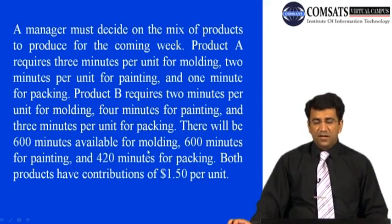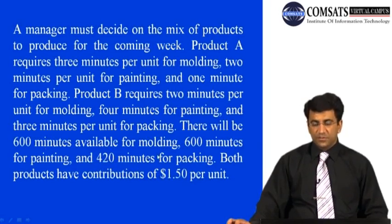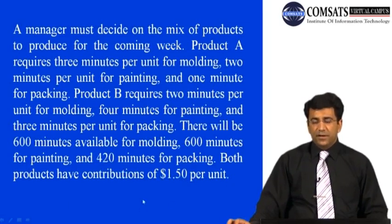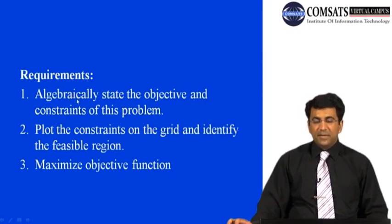Both products have contributions of $1.50 per unit — producing one unit of Product A gives $1.50 profit, and one unit of Product B also gives $1.50 profit. The task requires us to: state the objective and constraints algebraically or graphically, plot the constraints on a grid to identify the feasible region, and maximize the objective function.